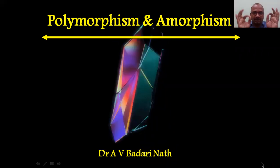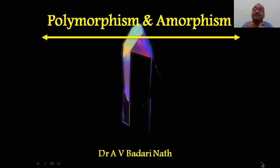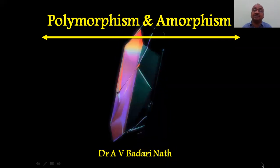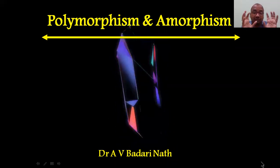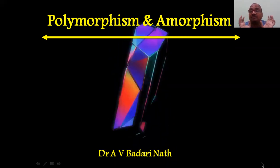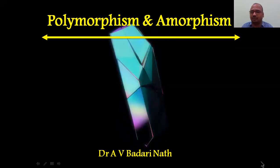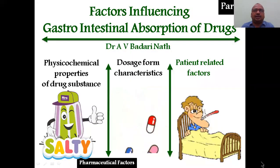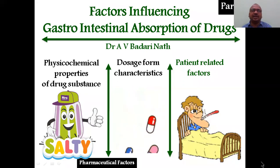Here we are seeing the crystalline form of paracetamol. Paracetamol is available in amorphous form as well as crystalline form. Here you are observing a microphotograph of the paracetamol crystal particle under a powerful microscope. The factors influencing GI absorption are mainly three: physical-chemical properties, dosage form characters, and patient-related factors — the first two are called pharmaceutical factors.